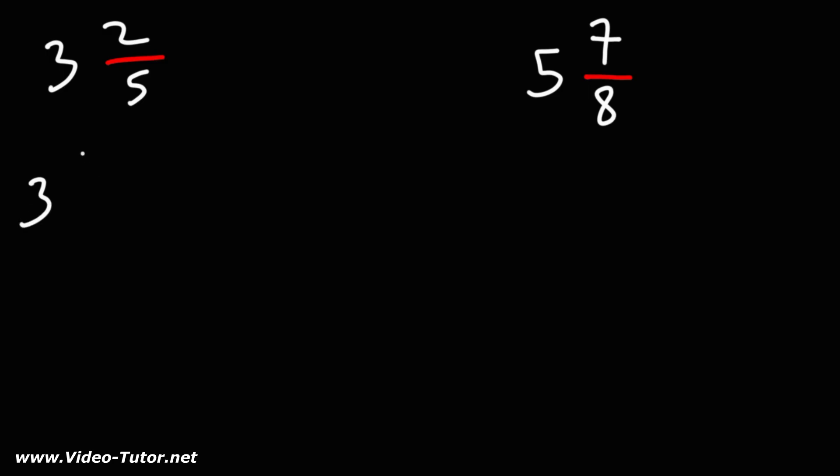So let's start with the mixed number 3 and 2 fifths. We can write this as 3 plus 2 over 5. Now, this part, we want to convert it into a decimal.